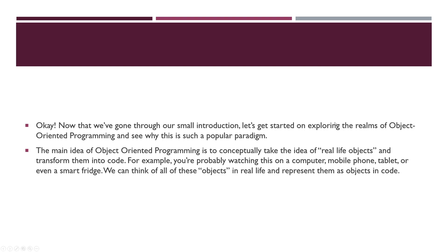We can think of all of these things as objects in real life and we can represent them in code. For example, I can represent a computer — a real-life object — as an object in code in JavaScript. Same thing with a mobile phone, a tablet, or even a smart fridge. Before we move forward, I want you to start thinking about all the objects you see around you.